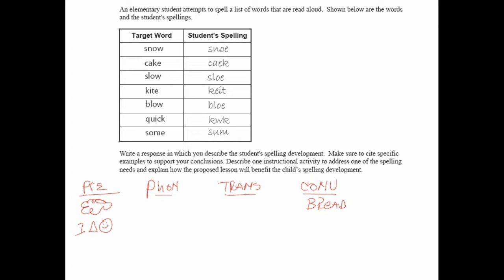The phonetic stage is spelling by dominant sound. Perhaps the initial sound of bread, or the initial two sounds of bread, or all of the dominant sounds in bread, or even very late phonetic spelling of B-R-E-D — clearly phonetic, because it's by the sounds that they hear in the word. This certainly shows more progress than pre-phonetic spelling, but it is not as advanced as transitional spelling.